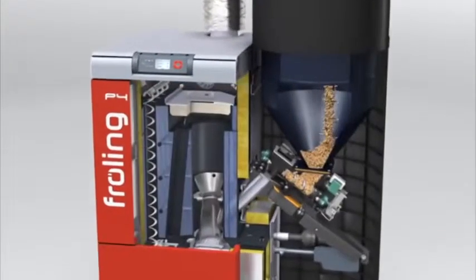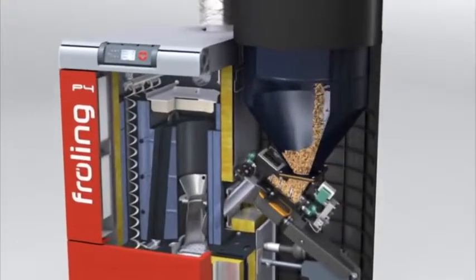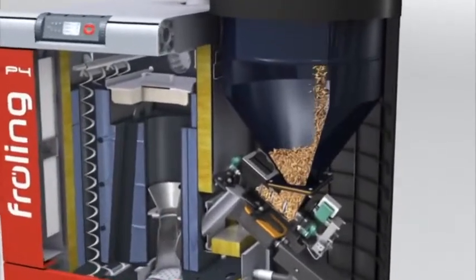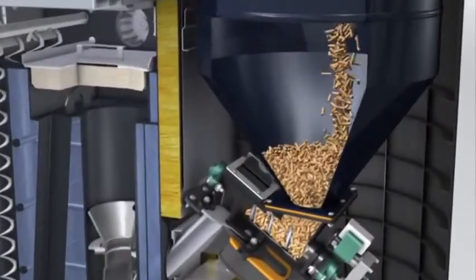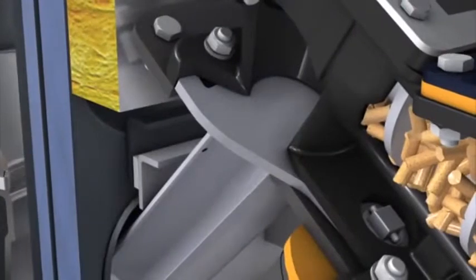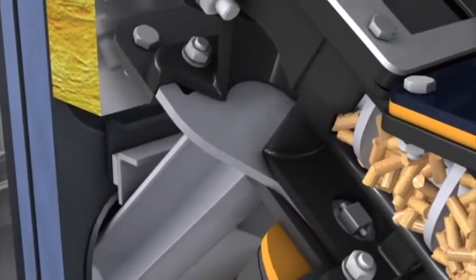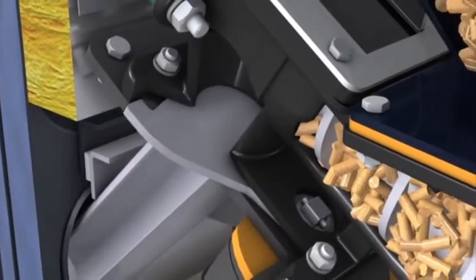The pellets are transported through a suction system into the high-capacity supply bin. A system self-test with automatic fault diagnosis is carried out each time the unit is started, ensuring safe and reliable operation.